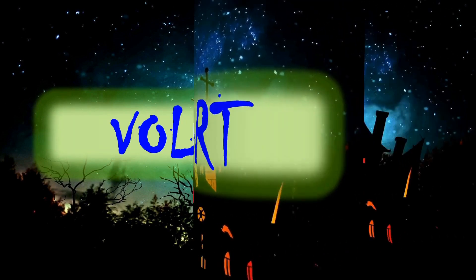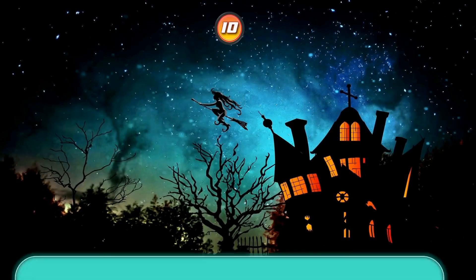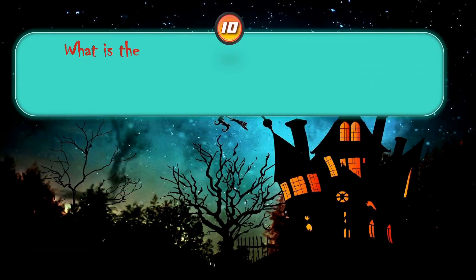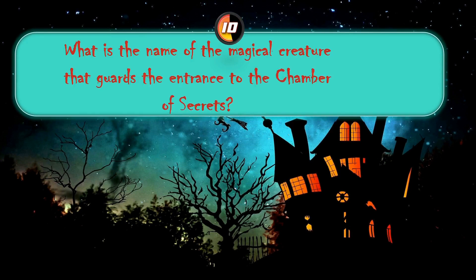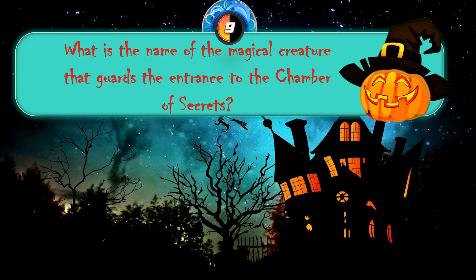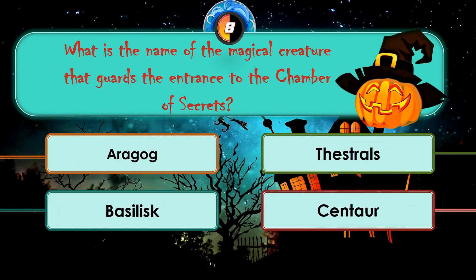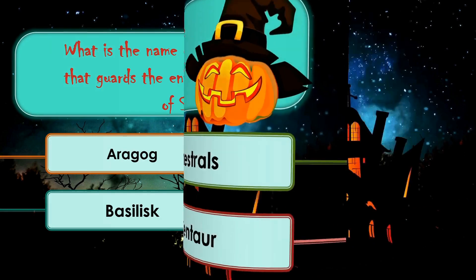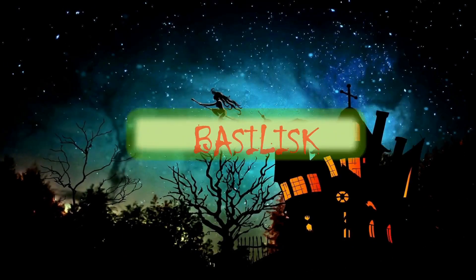Moving to next question: what is the name of the magical creature that guards the entrance to the Chamber of Secrets? Aragog, Castrels, Basilisk, Centaur. The correct answer is Basilisk.